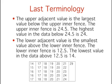Just a little more terminology and we will get back to drawing the box plot. The upper adjacent value is the largest value below the upper inner fence. If you recall, the upper inner fence is 24.5. Looking at the raw data, you can see that the highest value below 24.5 is equal to 24. Therefore, the upper adjacent value is 24.